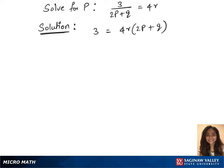In our next step, we have 3 on the left equals to — we'll distribute 4r — which gives us 8rp plus 4rq on the right. In our next step, we'll subtract 4rq on both sides, which gives us 3 minus 4rq equals to 8rp.